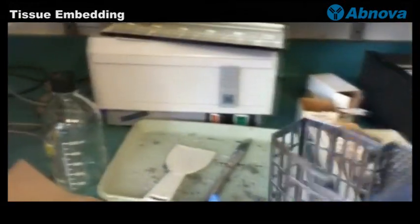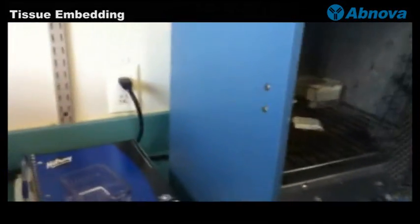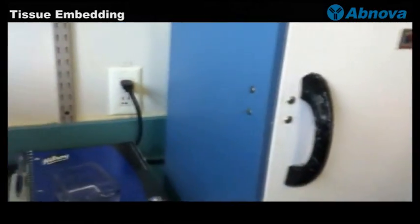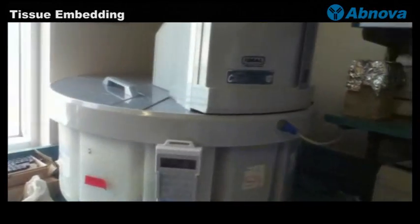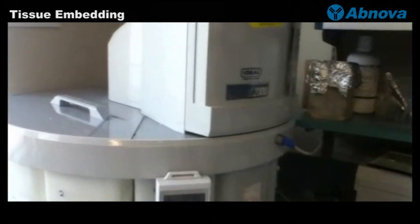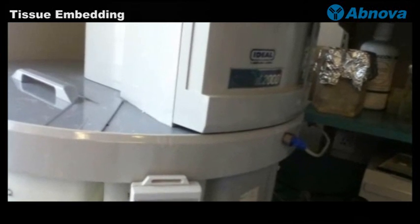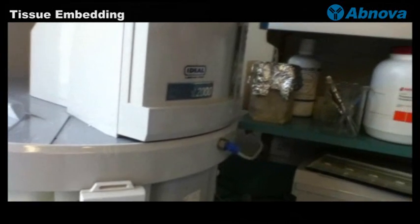We can put all this into a heated oven to make sure everything keeps warm. And this processing machine just helps us to dehydrate and do the clearing process for the tissue before it is infiltrated with the paraffin.